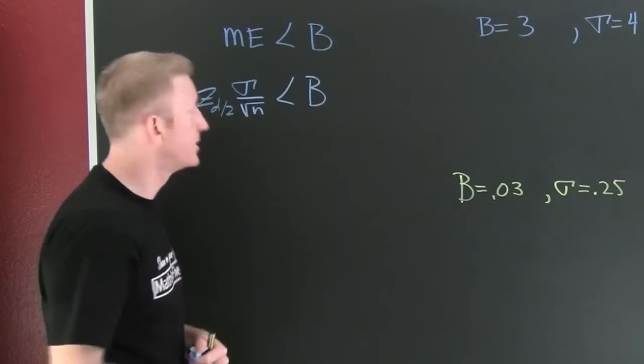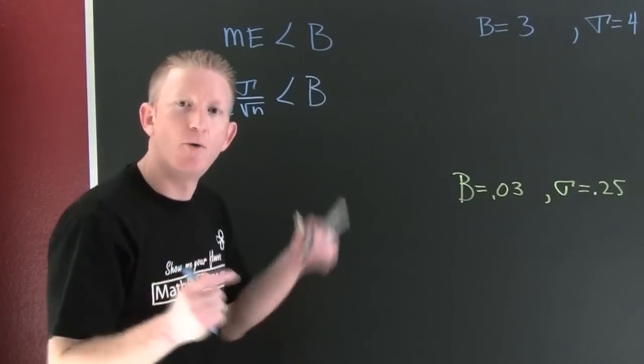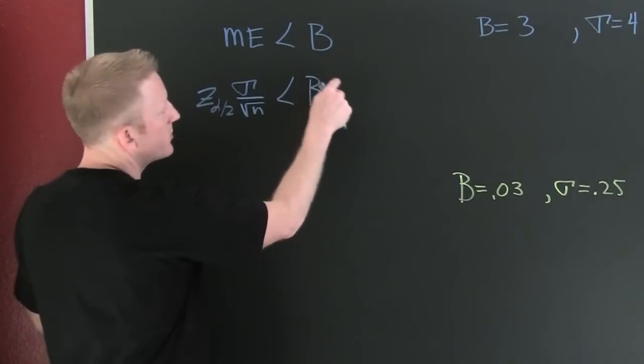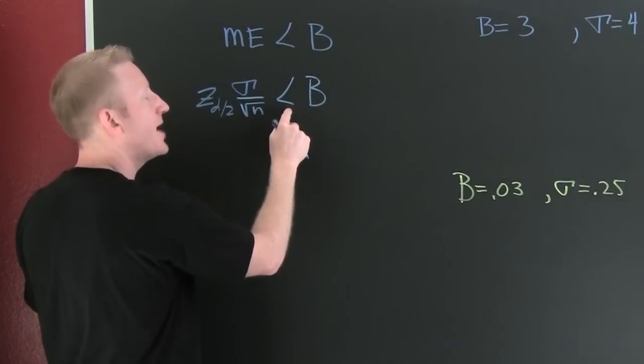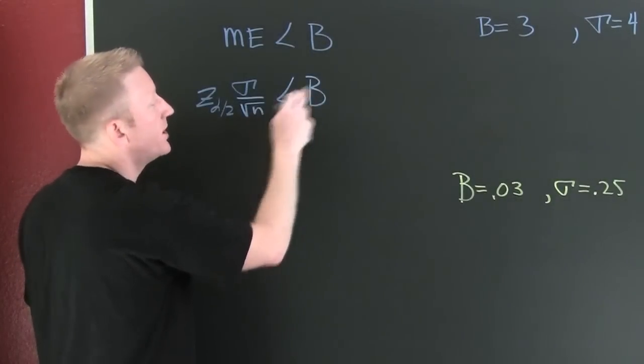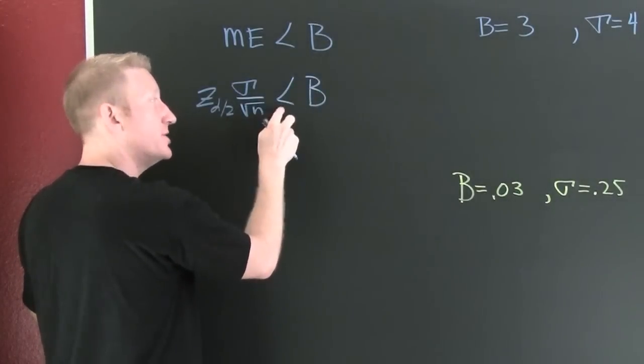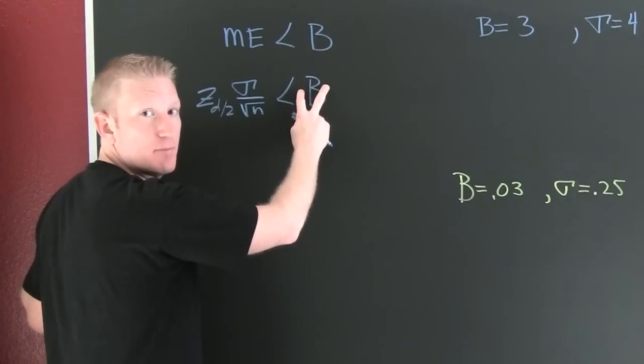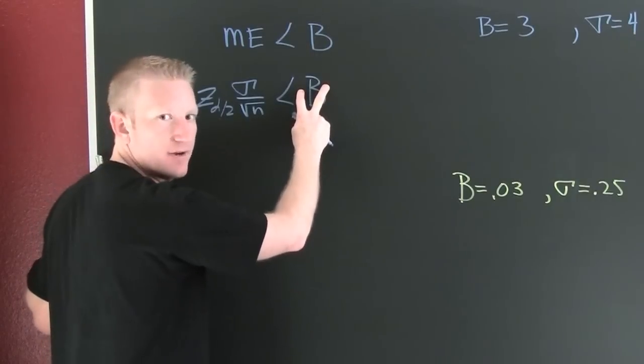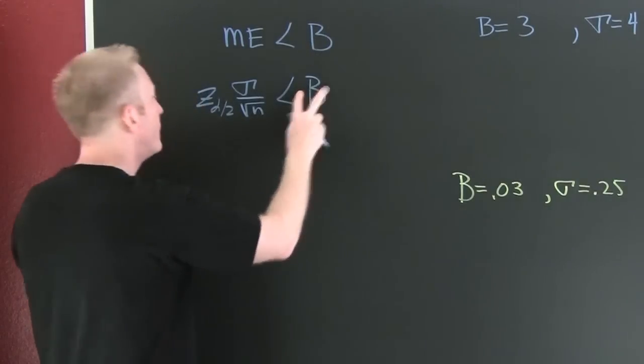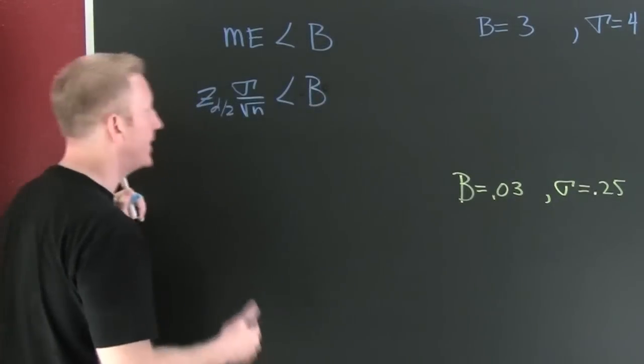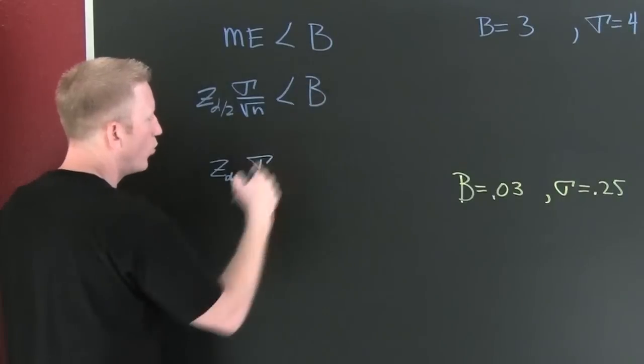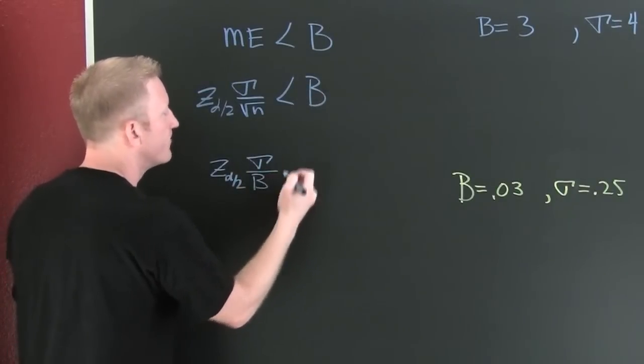I realize this is a stats class and you may not be algebra ninjas, but I want to solve for n. That sounds like algebra. I'm gonna multiply both sides by the square root of n. I don't need to flip that inequality because the square root of n is going to be a positive number. Then I want to divide by b, and I don't need to flip that because b is my bound on error and I choose it to be some positive number.